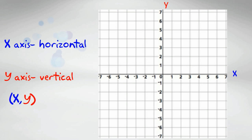You also see an ordered pair, which is in parentheses x comma y. That represents a location or a point on the coordinate grid.